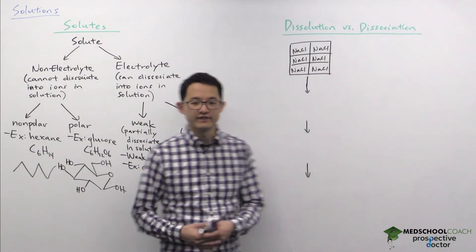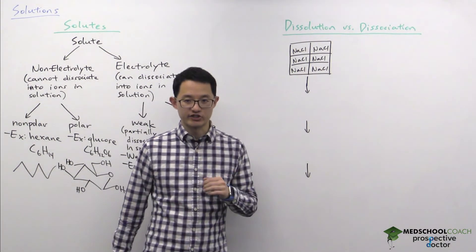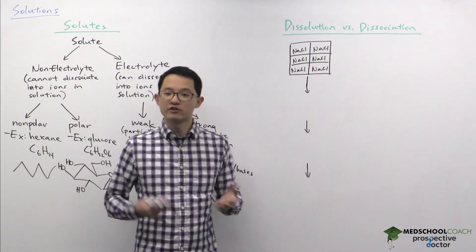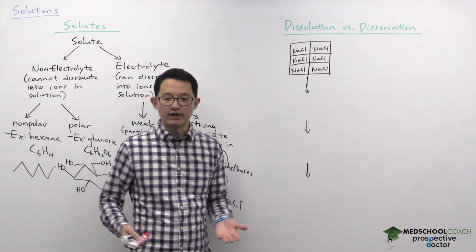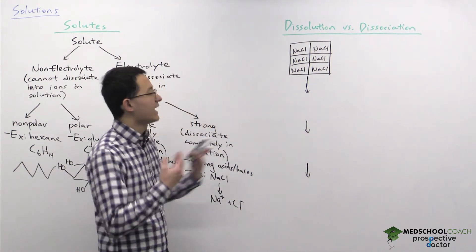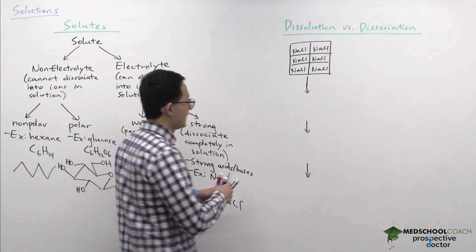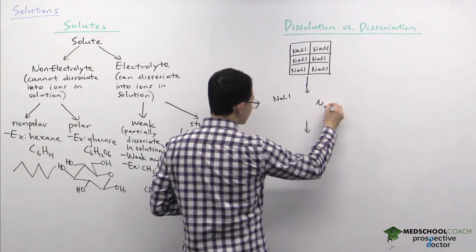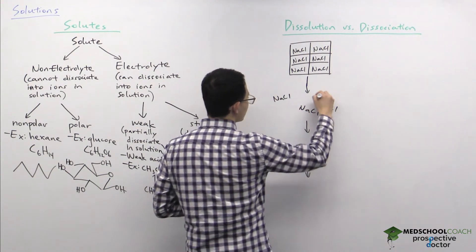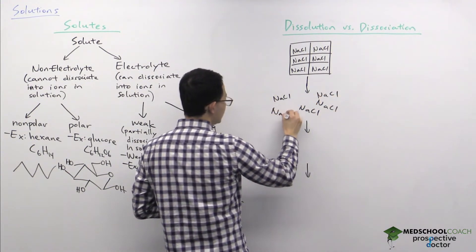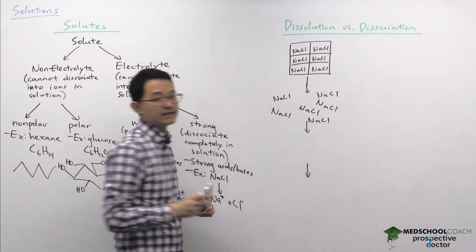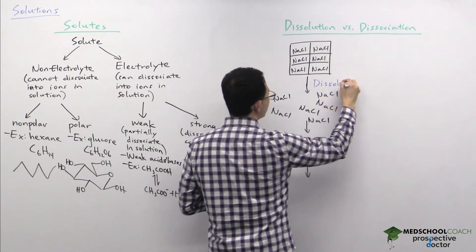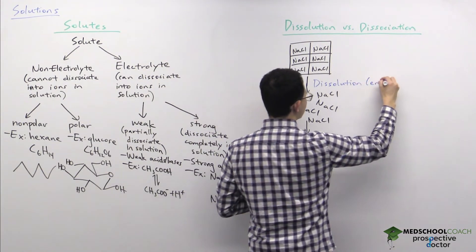Now let's talk about the difference between dissolution and dissociation. Starting with a block of sodium chloride: when we add sodium chloride to water, the first step that occurs is dissolution. In dissolution, the block of sodium chloride separates into individual NaCl molecules. Dissolution is an endothermic process.